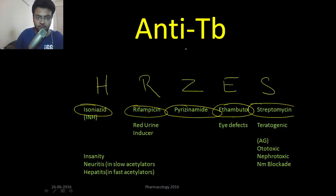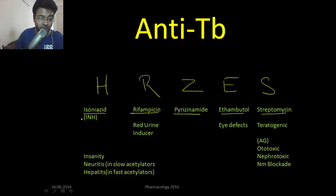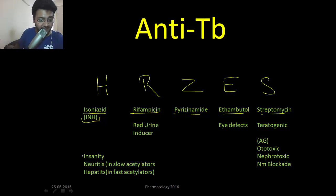Next are anti-tubercular drugs. These are the first-line anti-tubercular drugs: H, R, Z, E, S — isoniazid, rifampicin, pyrazinamide, ethambutol, and streptomycin. Isoniazid is written in short as INH. The three main side effects of isoniazid are insanity, neuritis, and hepatitis.